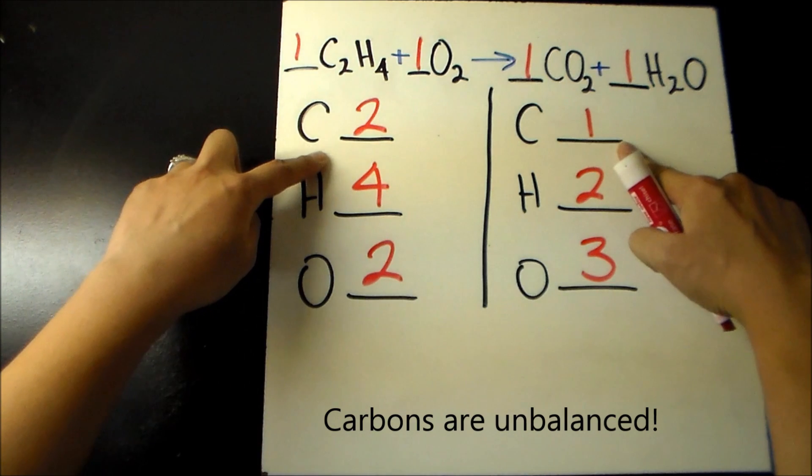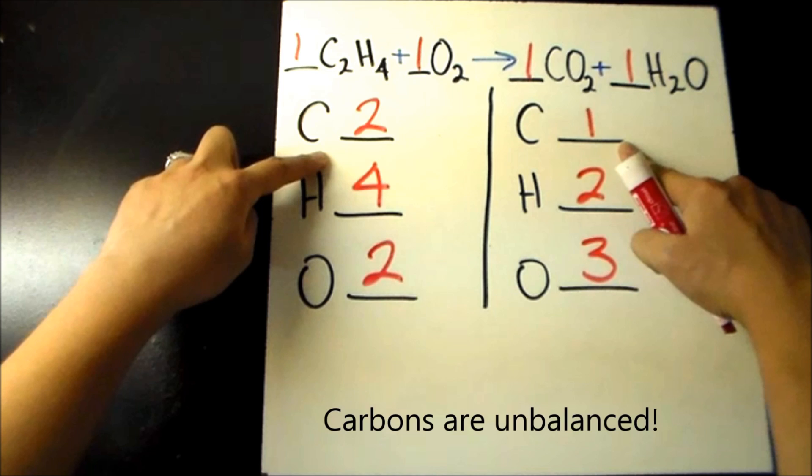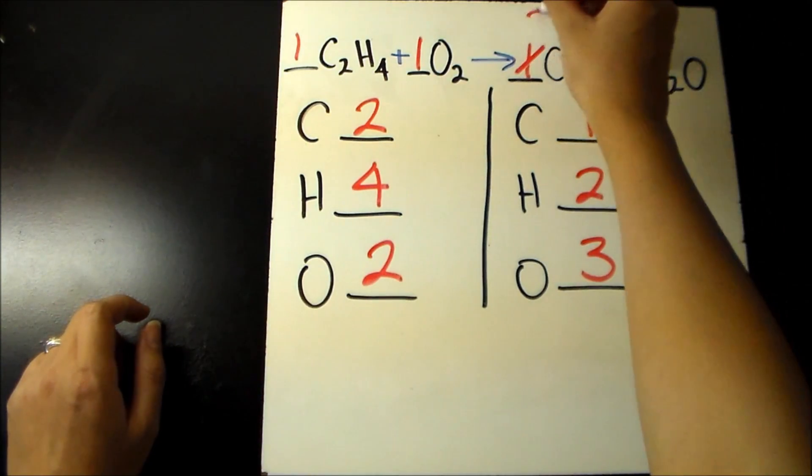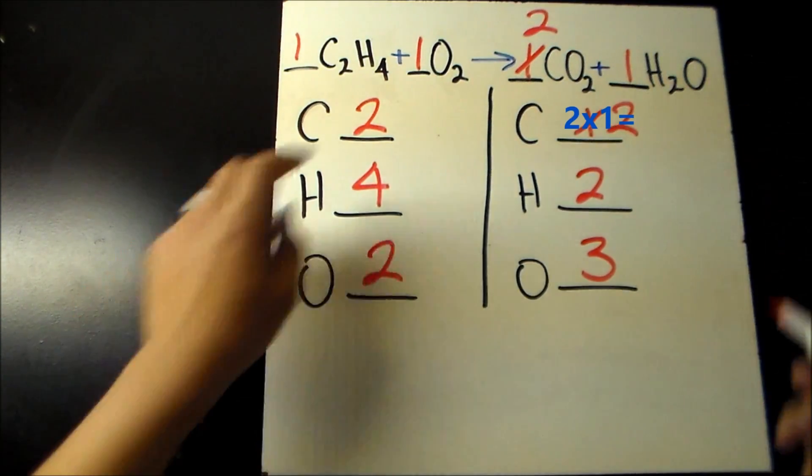Because there are 2 carbons on the left and 1 on the right, the number of carbons is unbalanced. Step 3 states that the only thing you can do in balancing is to add coefficient before each compound on the line drawn. By placing a 2 before CO2, the number of carbons changes to 2 times 1 equals 2.